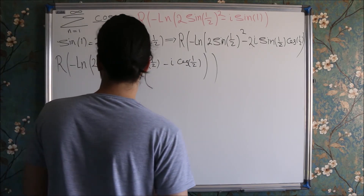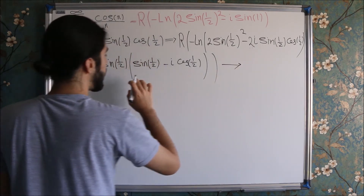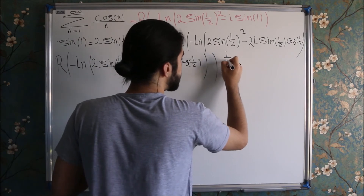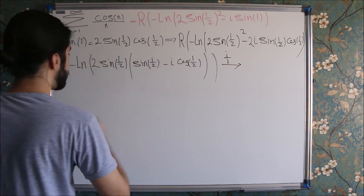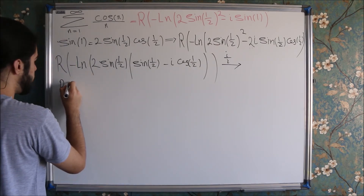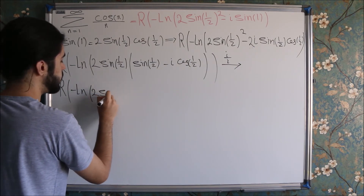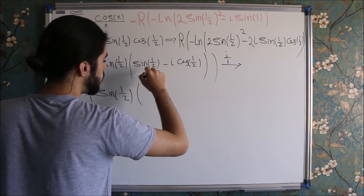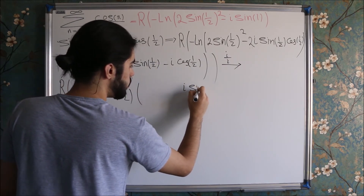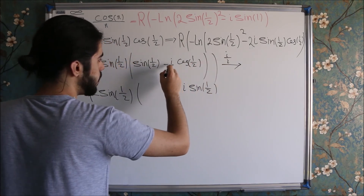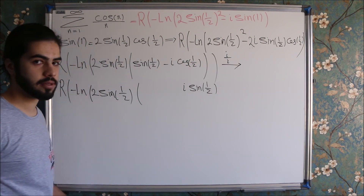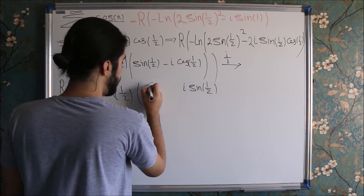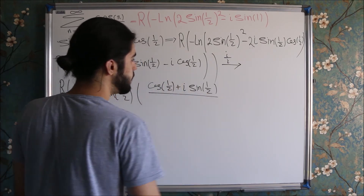Now I can multiply and divide by i inside the logarithm, since it won't affect the overall expression. Multiplying i into the parenthesis: i times sine of 1 over 2 gives i times sine of 1 over 2, and the minus signs cancel so we get positive cosine of 1 over 2. So the parenthesis becomes i times sine of 1 over 2 plus cosine of 1 over 2.